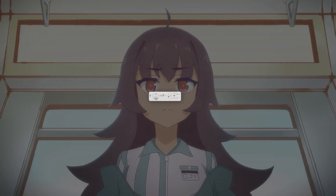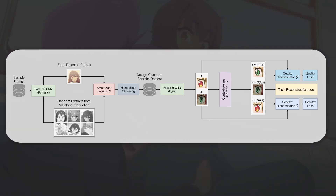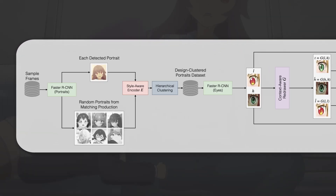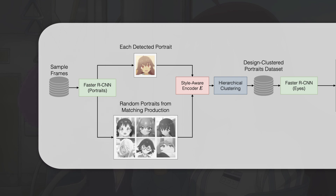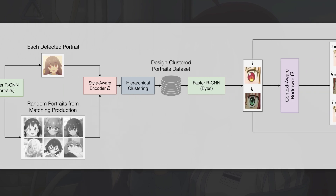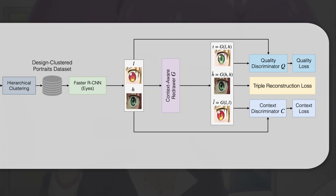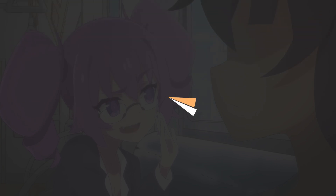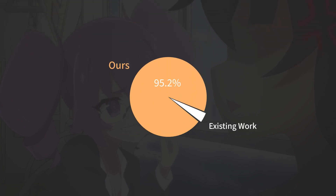Existing work wasn't capable of solving this problem. To pull this off, we had to come up with novel general deep learning solutions. We introduce a novel character design recognition method that generalizes to arbitrary production art styles without fine-tuning. But more importantly, we introduce context-aware translation, a novel image-to-image translation method that is designed to balance three opposing constraints: the original content, the intended design of the output, and its context within the scene. It does so by employing two contradictory adversarial discriminators and a novel reconstruction loss. Our solutions were preferred 95% of the time over existing work, according to a user study.